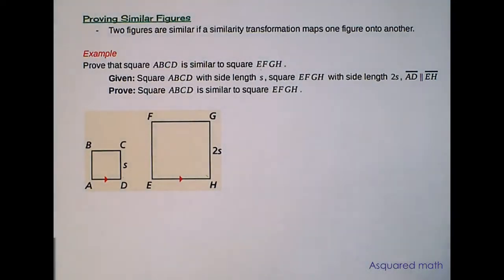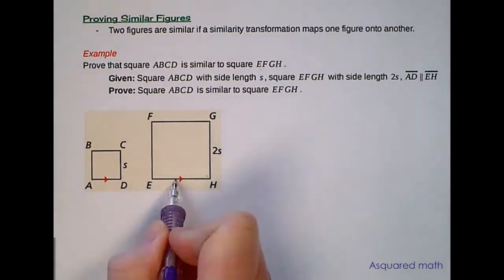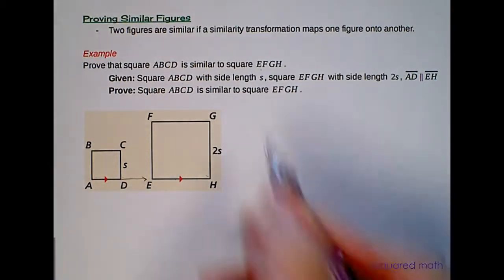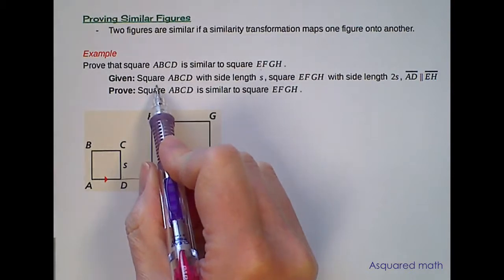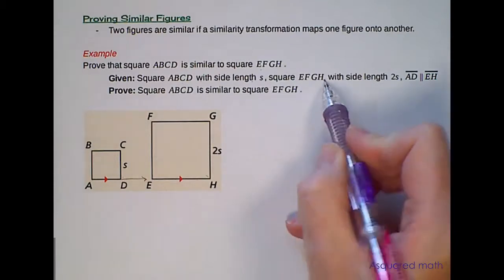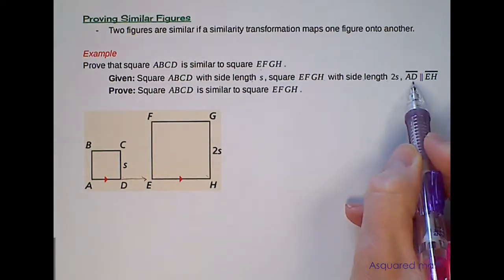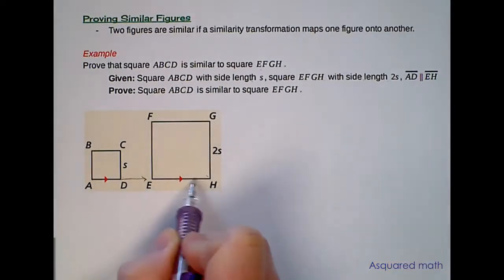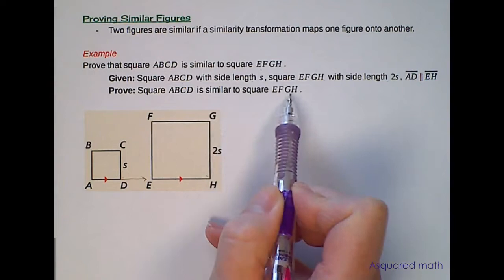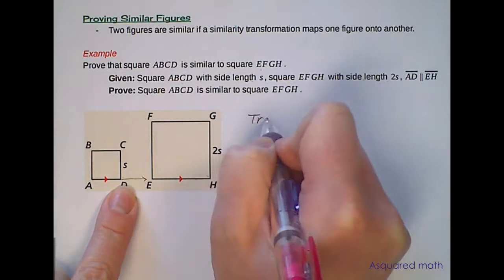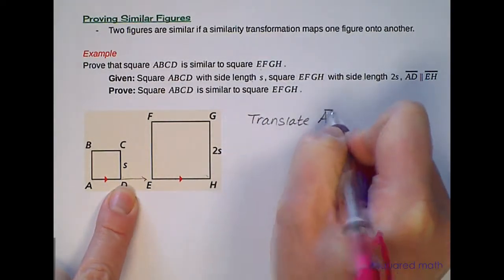So the first thing that we need to do in order to start mapping ABCD onto this larger square is we need to translate it to the right. And if we look at the given information it says square ABCD with side length S, square EFGH with side length 2S, and AD is parallel to EH. So AD and EH are parallel as marked in the pictures. We want to prove ABCD is similar to square EFGH. So let's go ahead and write down that we have to translate line segment AD to the right.